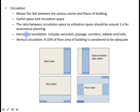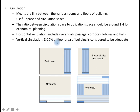Next is circulation. Circulation is the amount of wind allowed to flow through a particular room. There are two different kinds of circulation: horizontal circulation and vertical circulation. Horizontal circulation means the wind blowing from the veranda through passages, corridors, different rooms, lobbies, and halls. Vertical ventilation means at least 8 to 10 percent of the floor area of the building should allow passage of wind through different floors, like staircases.